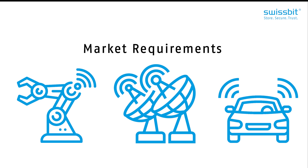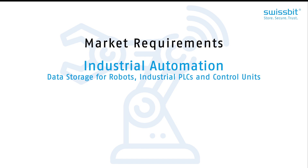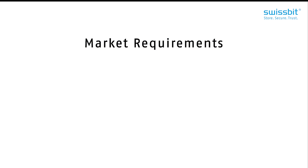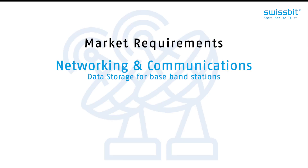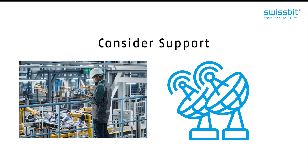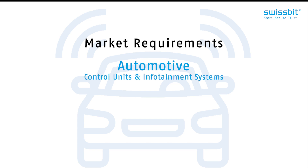When it comes to industrial automation — data storage for robots, industrial PLCs, and control units — the focus has always been on long-term availability and robustness, not necessarily high speed. If you look at the netcom market, on the other hand, the focus is on robustness but it is also very much paired with high-speed requirements. Another often overlooked difference is support access: an industrial PLC is likely in a factory with on-site support, compared to a baseband station which may be in a remote, hard-to-access location.